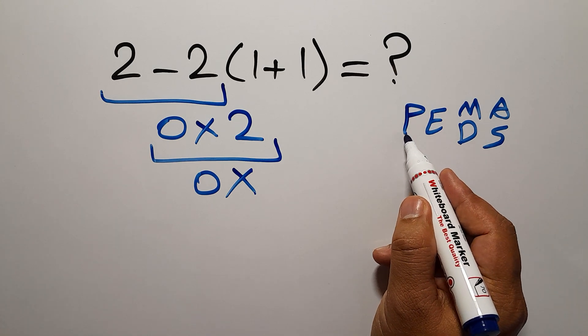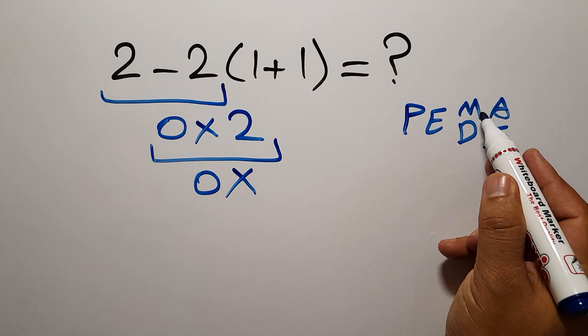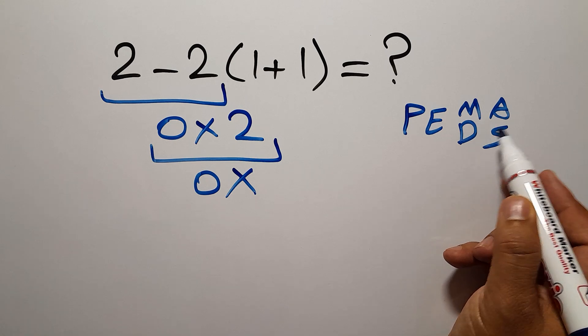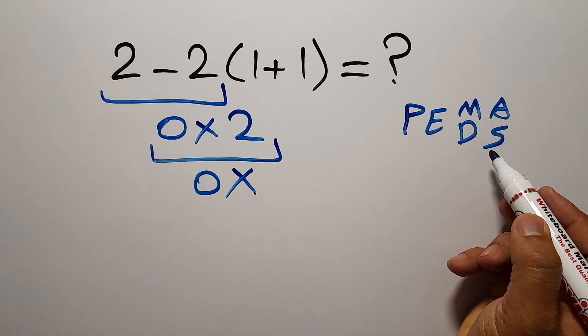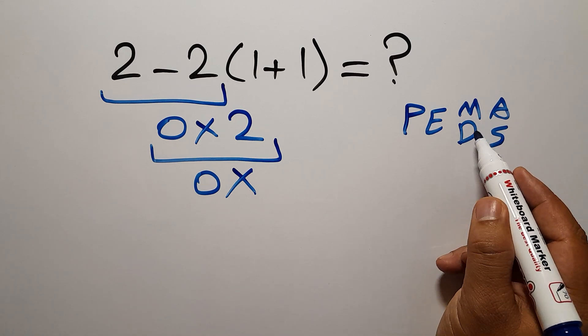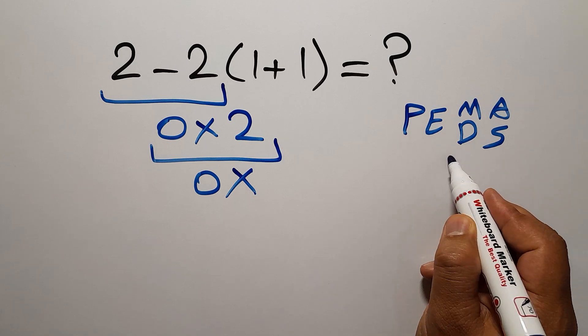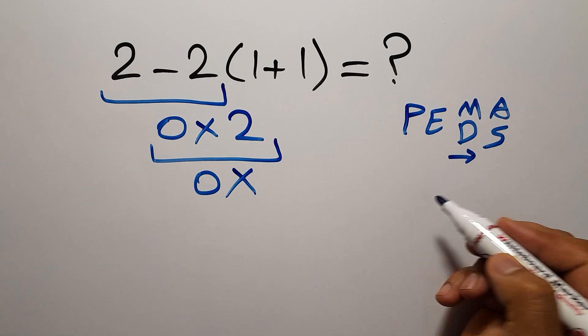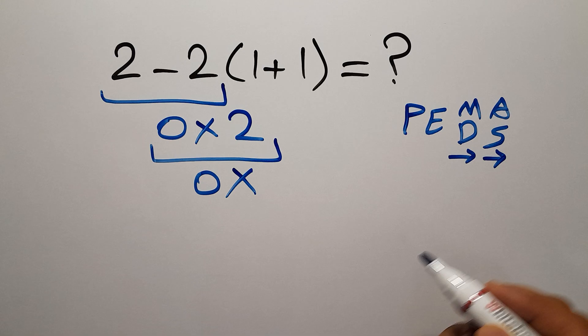First, we have to do parentheses, then exponents, then multiplication or division, and finally addition or subtraction. Remember that multiplication and division have equal priority, and we have to work from left to right. And the same applies to addition and subtraction.